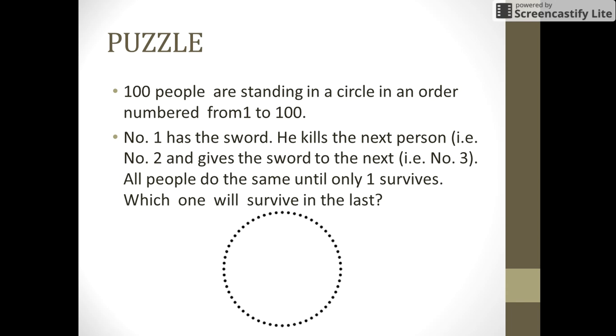First numbered person has a sword in his hand. He kills the next person that is number 2 and passes the sword to the next that is number 3. All the people do the same until only one survives. So can you guess which numbered person survived in the last?